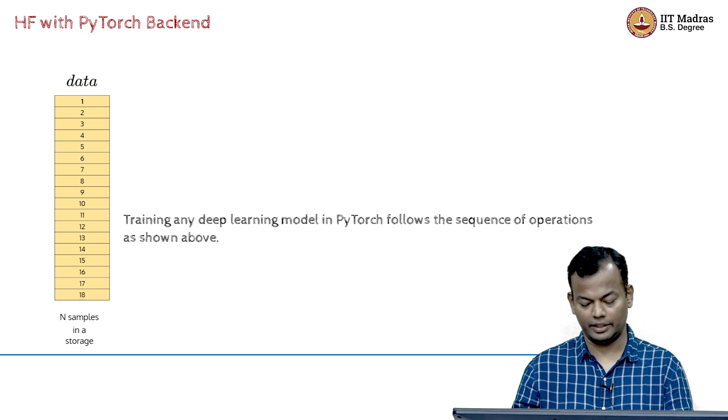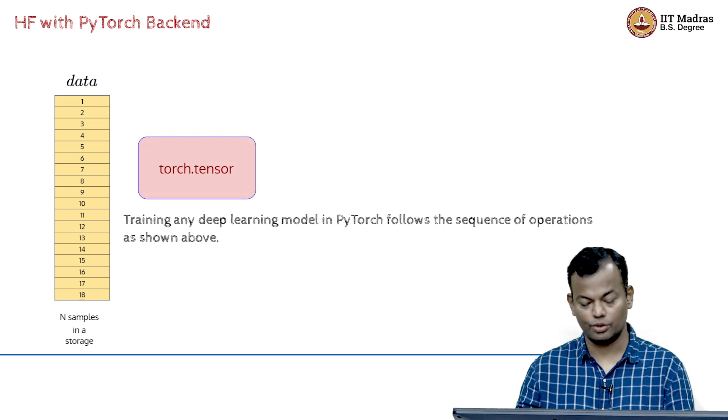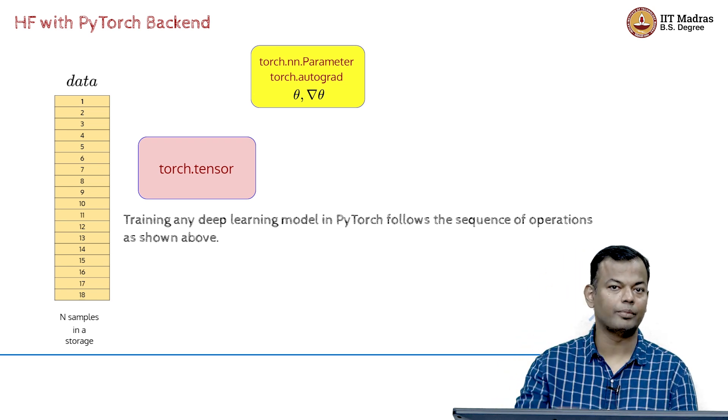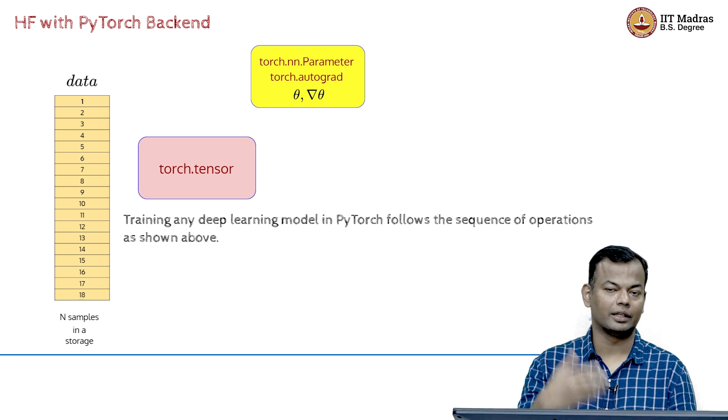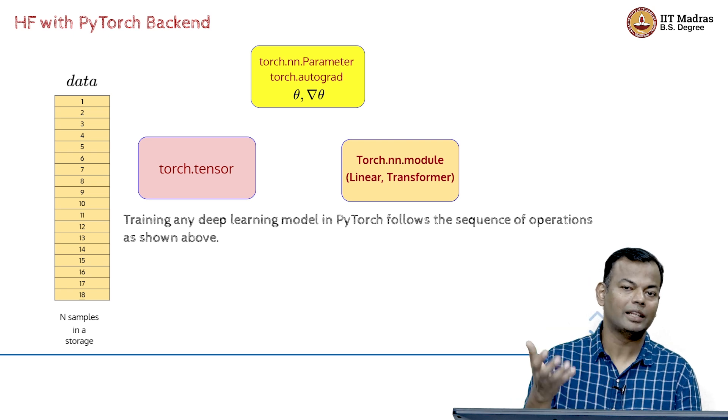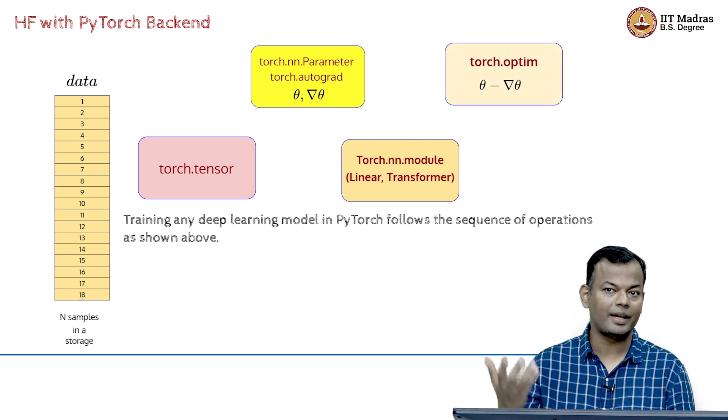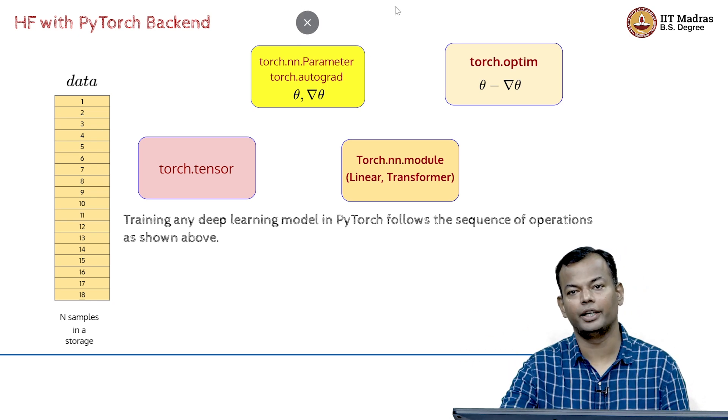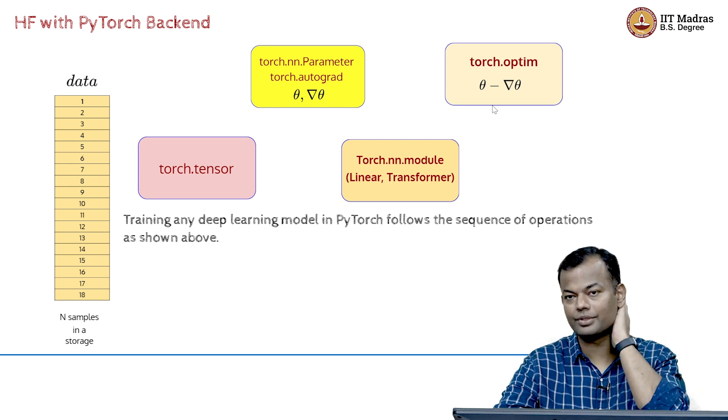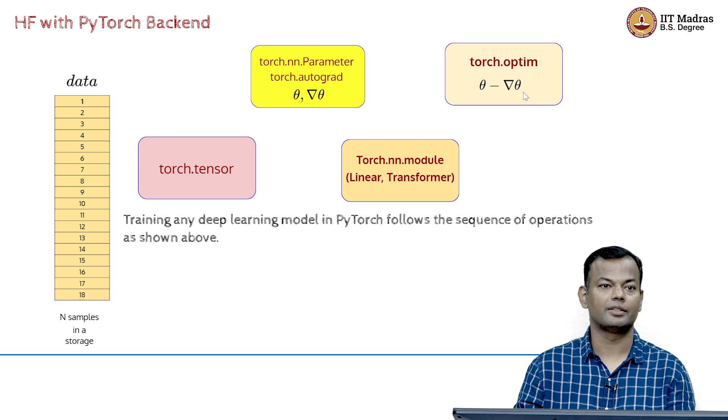But when you want to train the model, this is what happens in the background. You first have to consume the data as a tensor. Then you will have the parameters of the model and then you will have to do some auto-grad or the automatic gradient computation on the parameters. Then you have the model itself, which will have a linear layer, transformer layers and so on. And then you have the optimization algorithm which decides what is your weight update rule. Is it theta minus the gradient or is it any of the Adam style or momentum style update rules? That is what the optimizer decides.